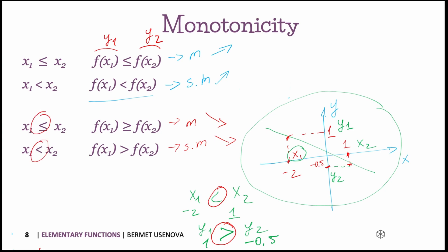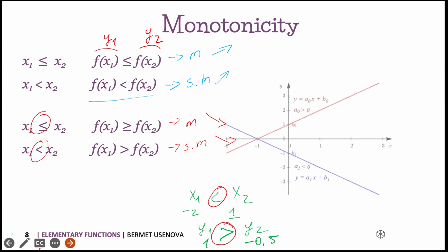You can simply observe this on the graph: if the line is decreasing, the y values decrease as we move to the right. Looking at the two graphs, you can clearly see that the first is strictly monotonically increasing and the second is strictly monotonically decreasing. Let's move on.